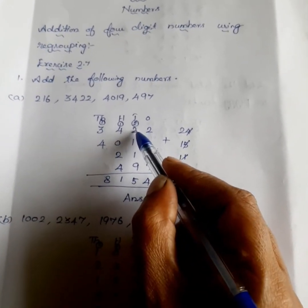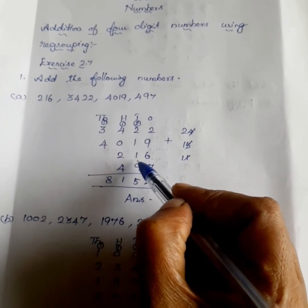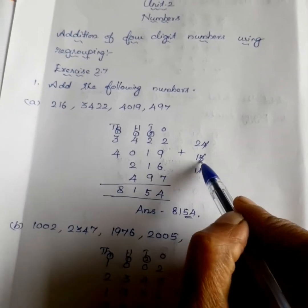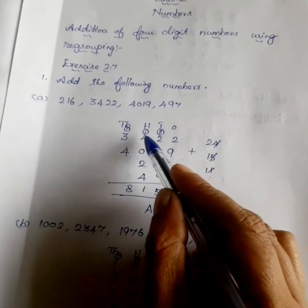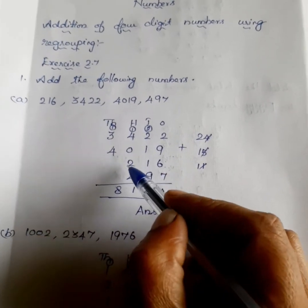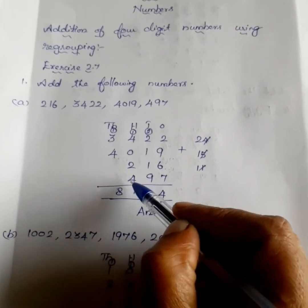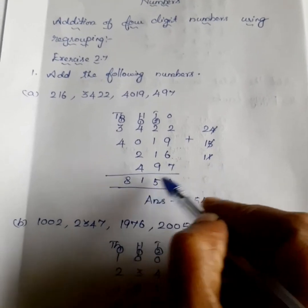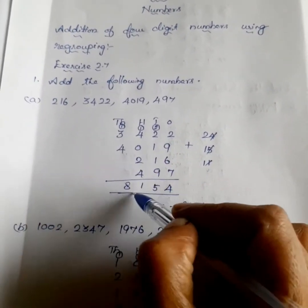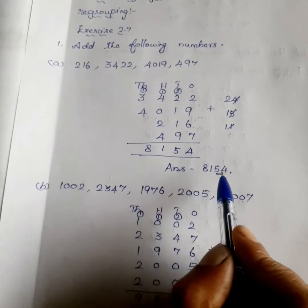2 plus 2 is equal to 4. 4 plus 1 is equal to 5. 5 plus 1 is equal to 6. 6 plus 9 is equal to 15. Write 5, remaining 1. 1 plus 4 is equal to 5. 5 plus 2 is equal to 7. 7 plus 4 is equal to 11. Remaining 1. 1 plus 3 is equal to 4. 4 plus 4 is equal to 8. Answer: 8,154.